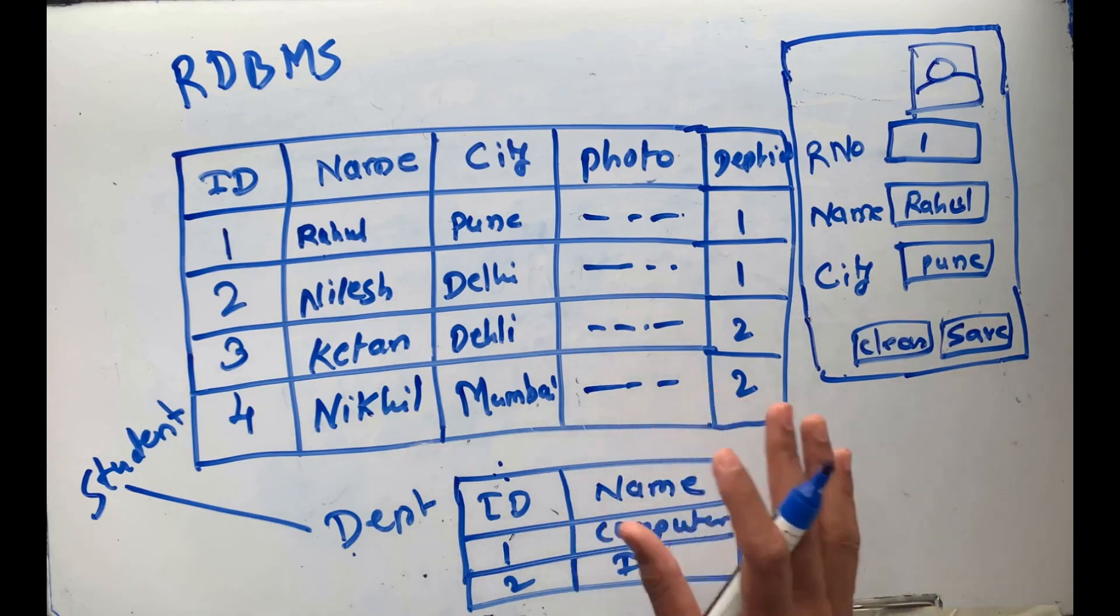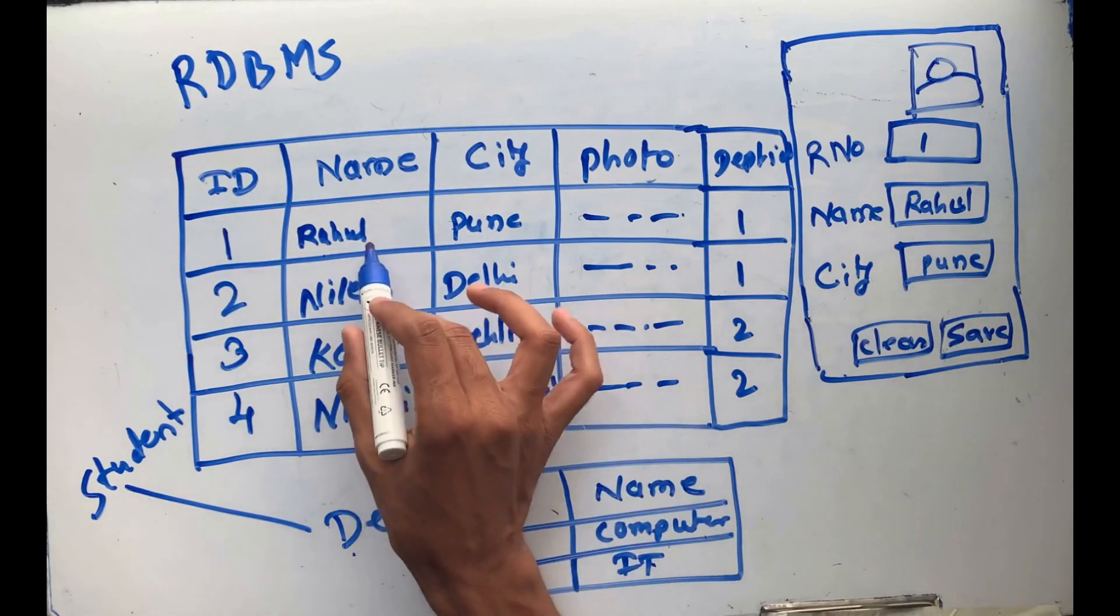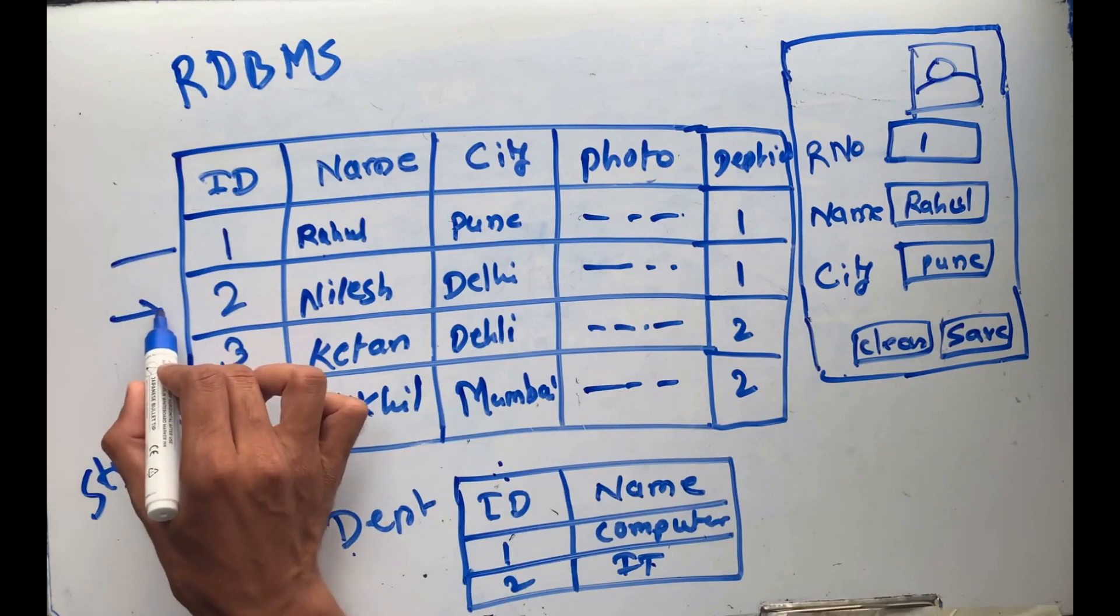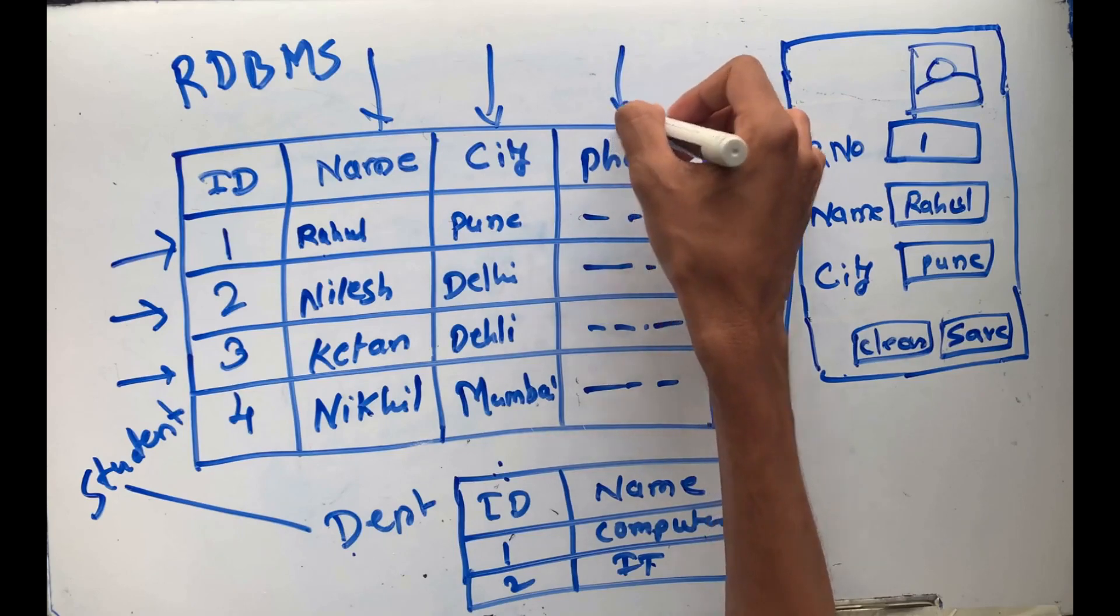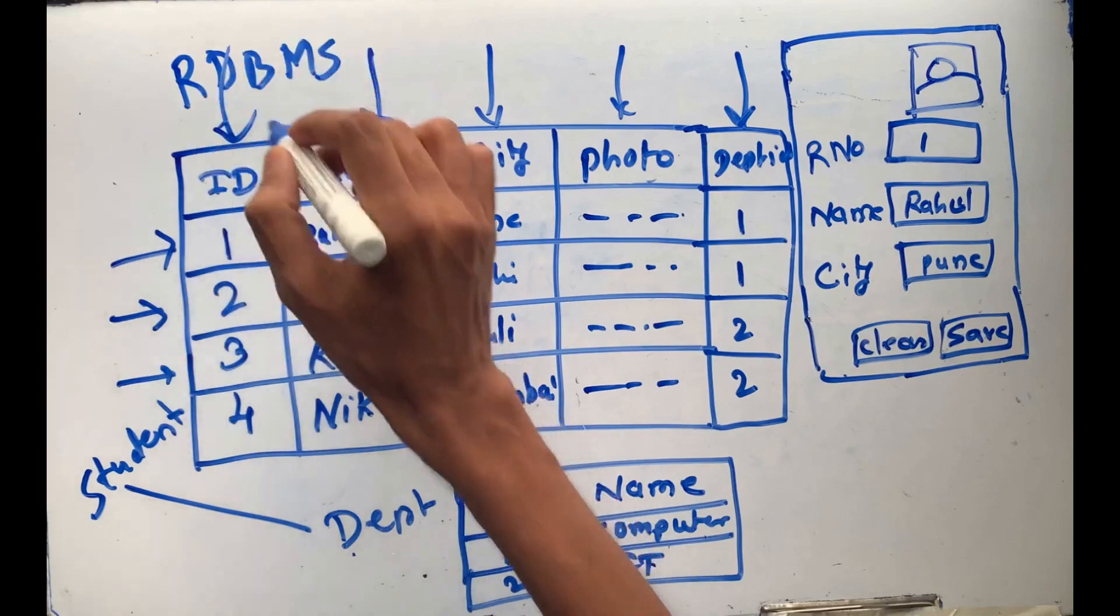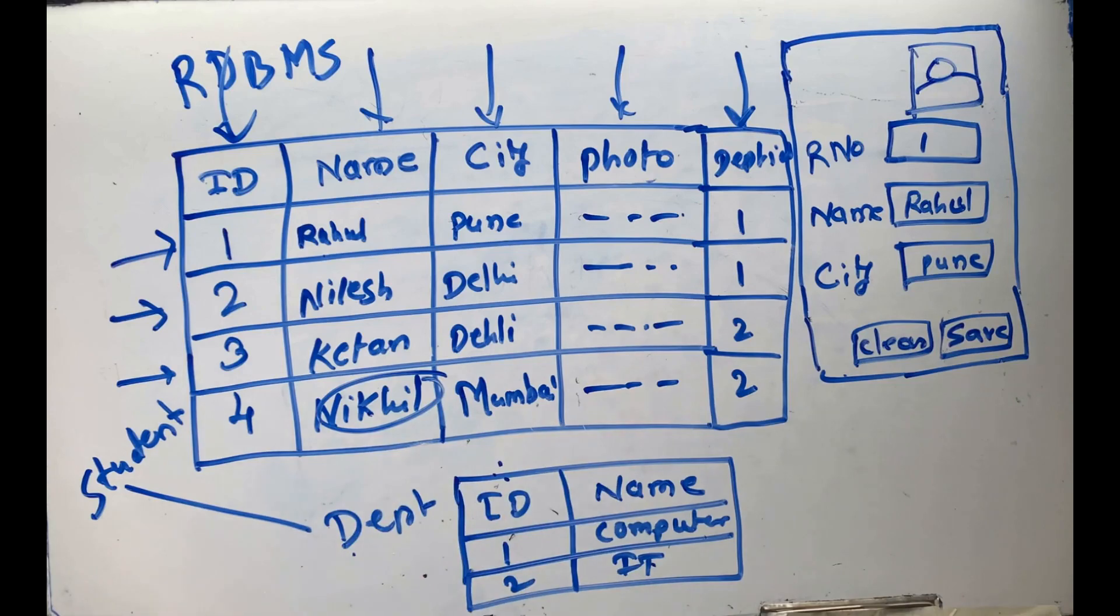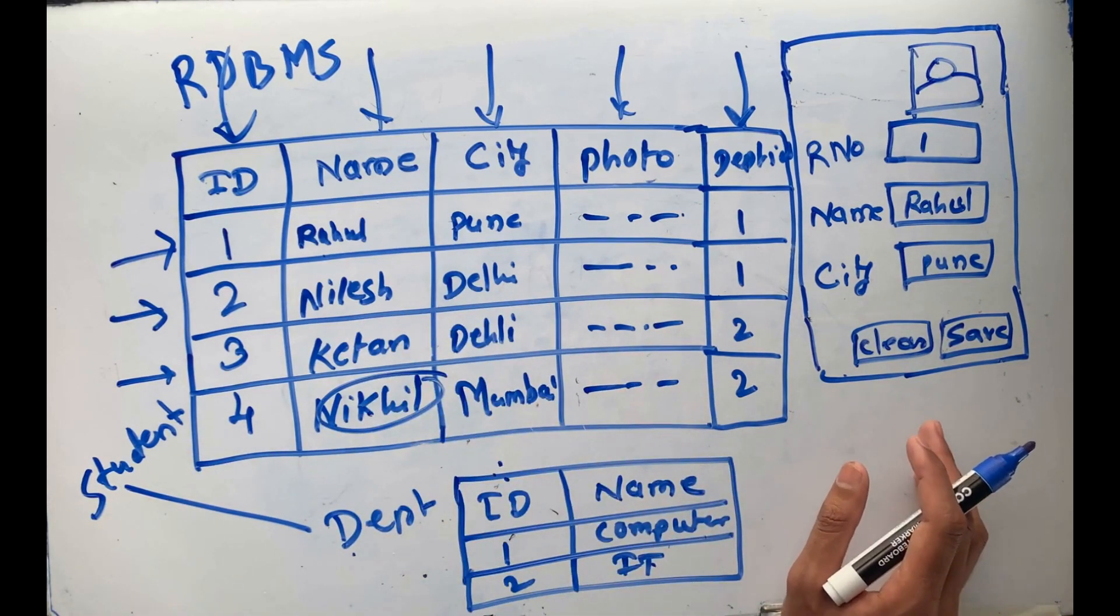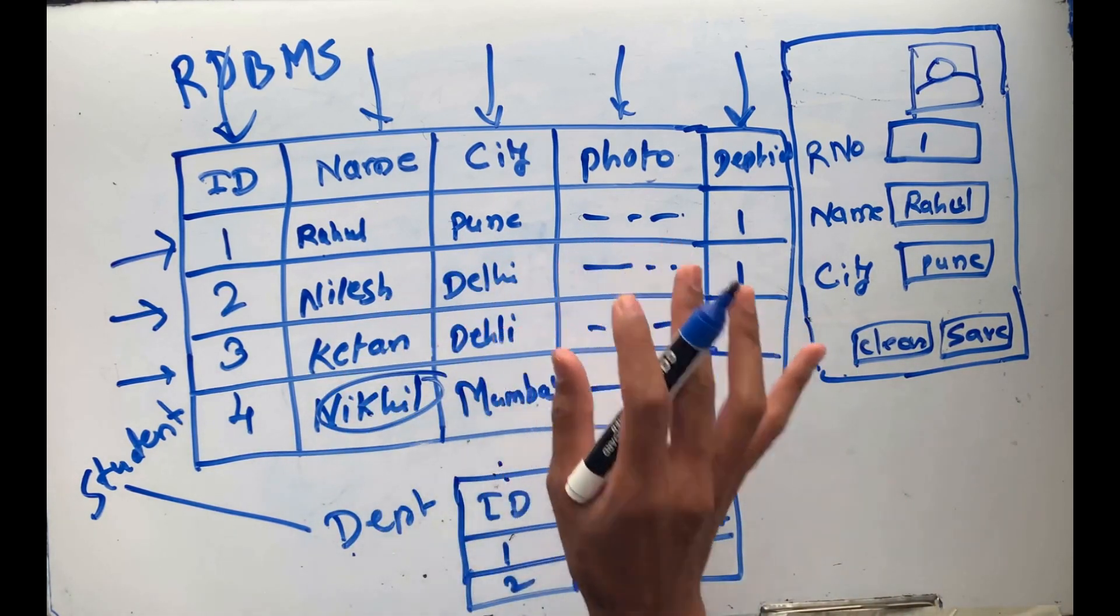We can store data in row and column format. These are the rows and these are the columns. Everyone can easily identify the columns, the rows, and the cell data. Everyone can easily understand what this is. Data is arranged in a tabular format known as a relation.